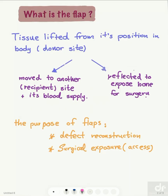I want to define the flap as a tissue lifted from its normal position — meaning from the donor site — it could be either moved to another site, which is called the recipient site, or reflected to expose bone for surgery. Simply, the purpose of the flap could be for defect reconstruction as in case number one, or for surgical exposure or access as in case number two.